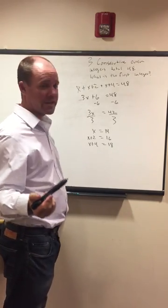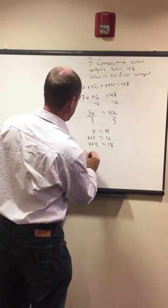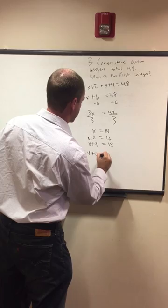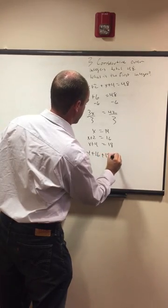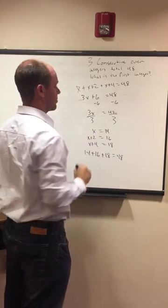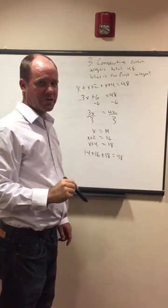Now, you can also back-check this to make sure we got the right answer. 14 plus 16 plus 18 equals 48, and that's the number we started with. We know we have the right answer, and that's how we do it. Thank you.